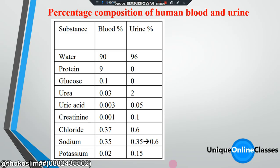This is the composition of human blood and urine. You can see blood contains about 90% water, and urine contains about 96% water.